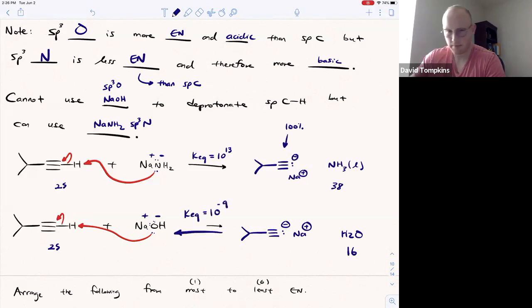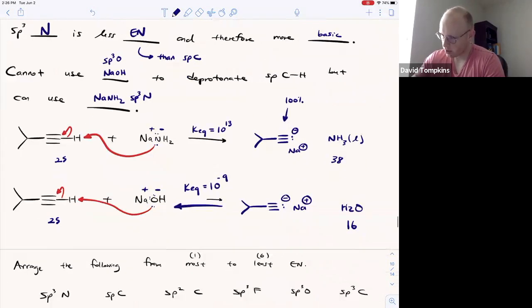16 minus 25. So that is actually product favored and this alkyne remains protonated. So we cannot use sodium hydroxide or any O- base to deprotonate an alkyne. It's too weak.